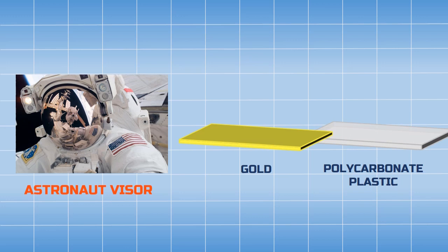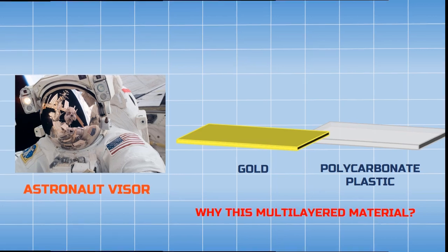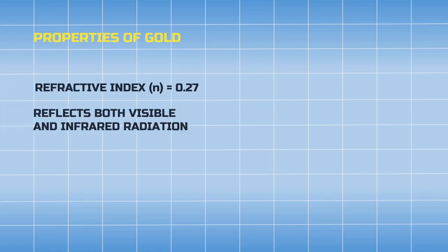But why is this multi-layered material? Let's look at some properties of gold and polycarbonate plastic. Gold has a refractive index of 0.27 and also reflects visible and infrared radiation, whereas polycarbonate plastic has a refractive index of 1.5 and is semi-transparent to visible radiation.